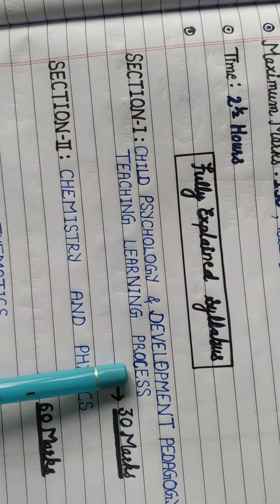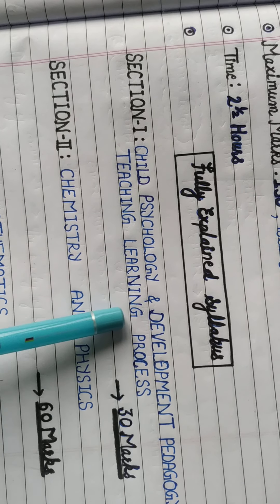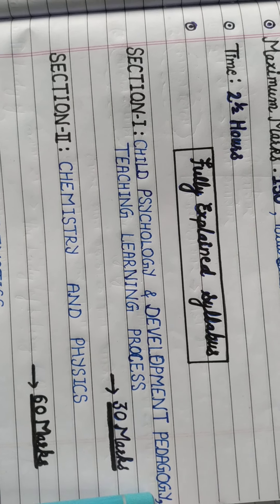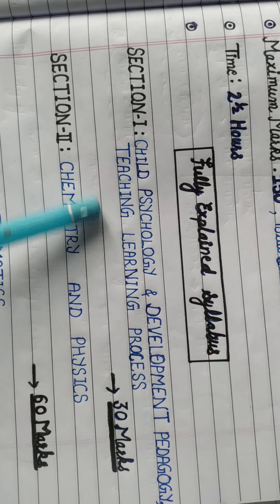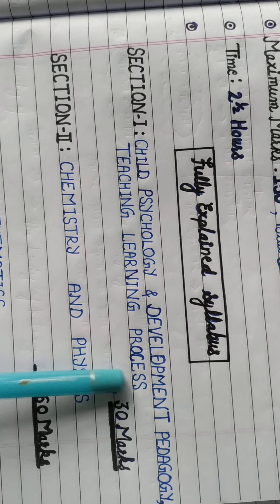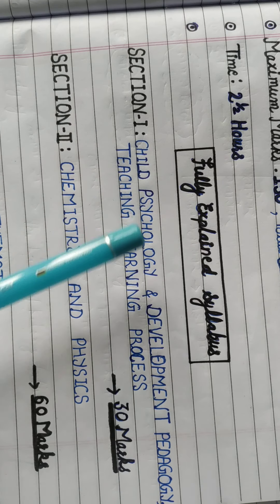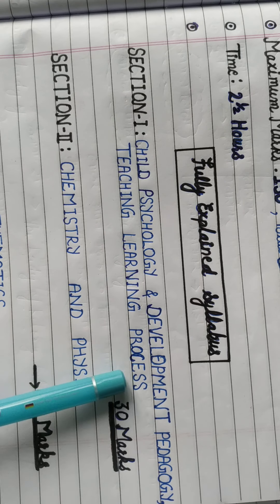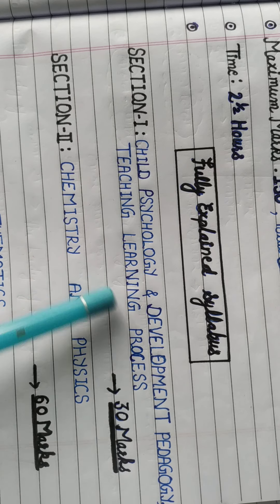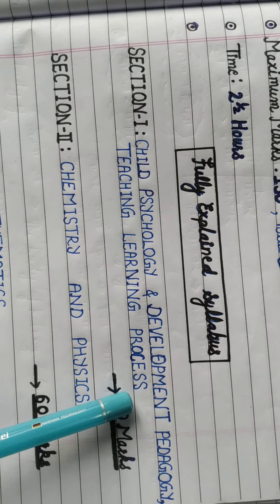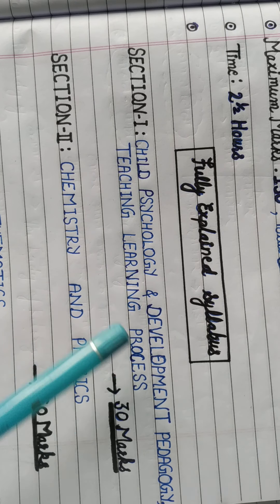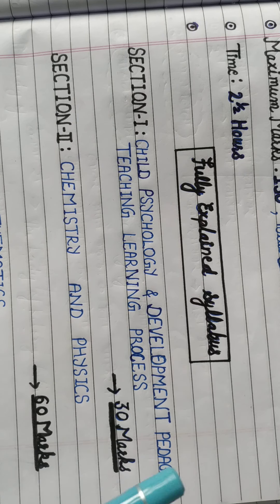If you have done your B.Ed. or are doing B.Ed., these subjects are taught in your first and second semesters — Psychology and Development in the first semester, and the Teaching-Learning Process in the second semester. In the first section there are a total of 30 questions, and usually 25 to 28 questions are asked. If you study B.Ed. books, you can easily score 25 to 30 marks.